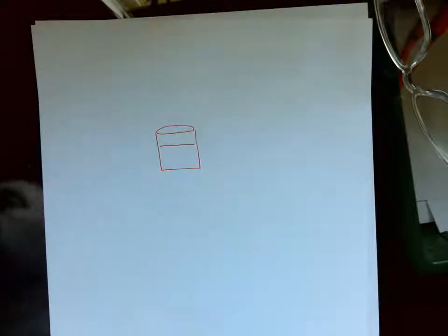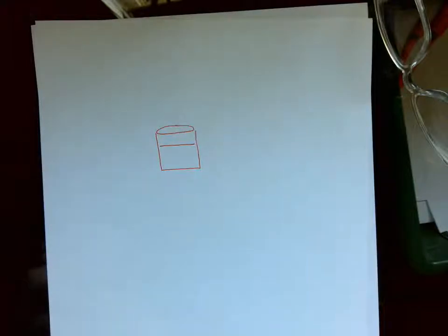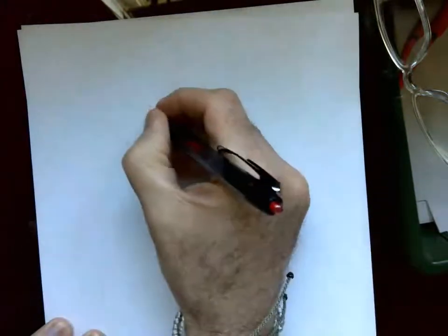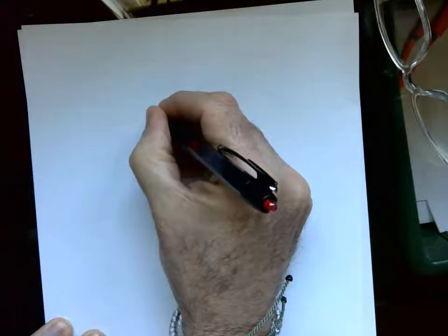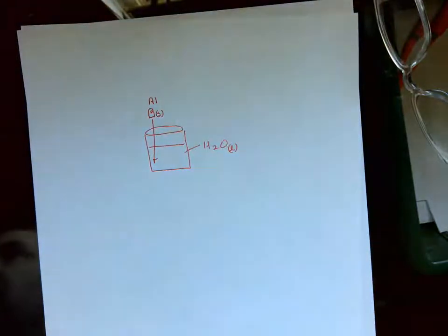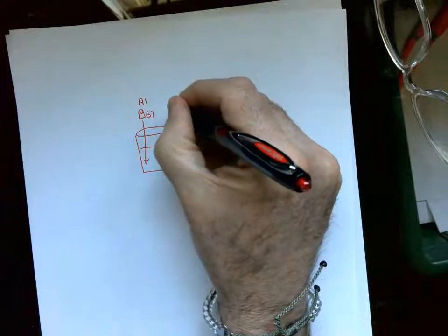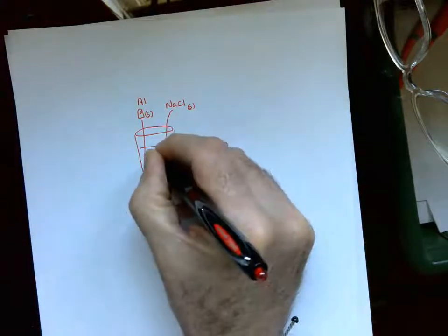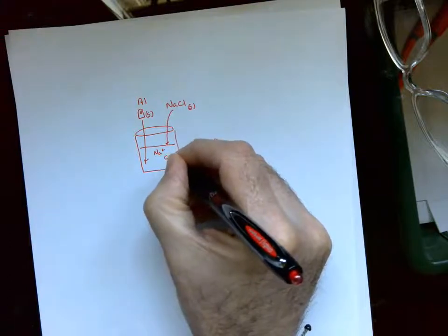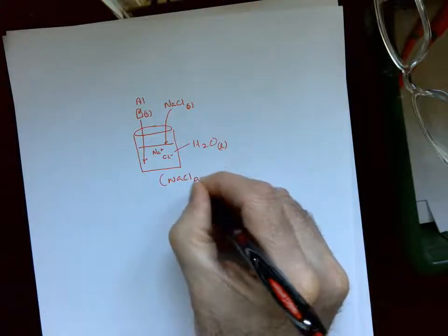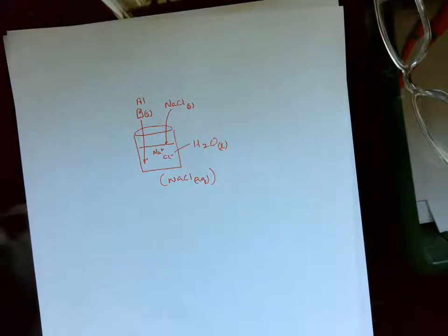Okay, what we're working on today is net ionic equations. Before we get there, you should understand a few things. This is H2O and it's a liquid. This is aluminum metal pop tab and it's a solid. If I put that in the liquid, it'll just sink to the bottom. This is NaCl solid, salt. If I put it into water, it's going to break down into its ions. Now we call this NaCl aqueous. Aqueous means something that dissolves in water.